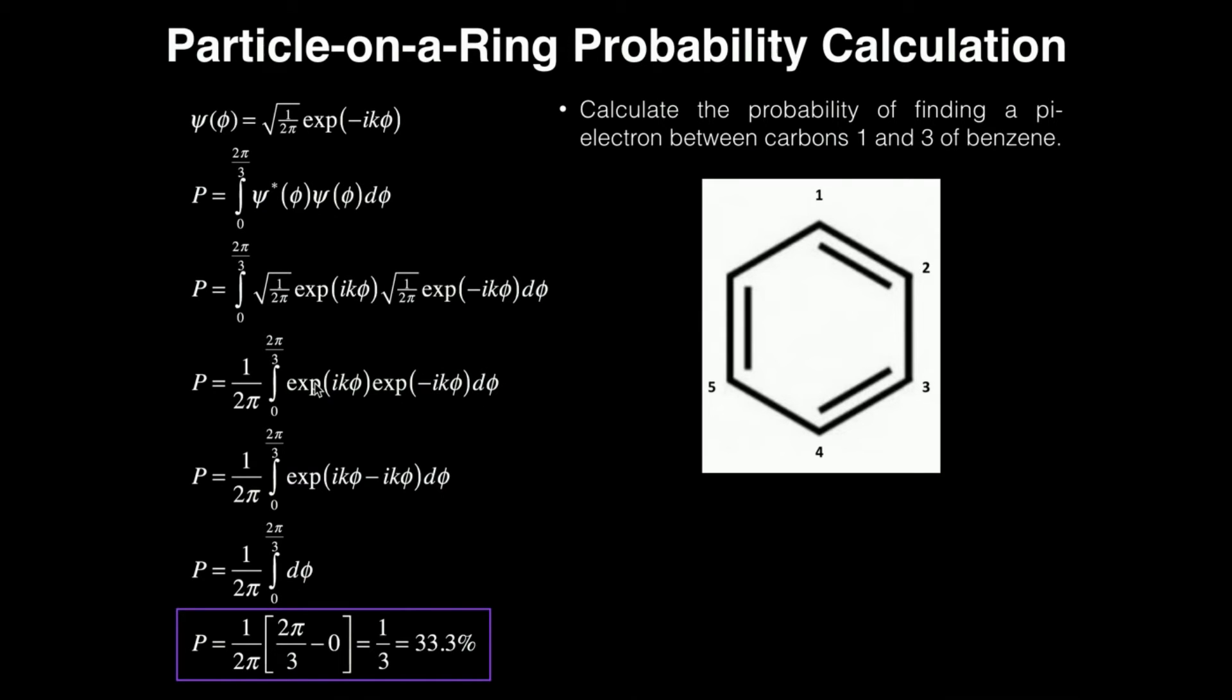Now, with exponential functions, as long as the base is the same, and the base is e in both of these, I can actually combine them together and take the sum of the function that's inside the exponential function. So it becomes e to the positive ik phi plus negative ik phi.